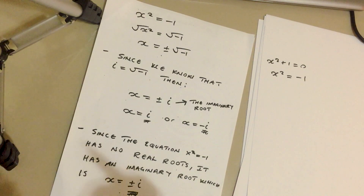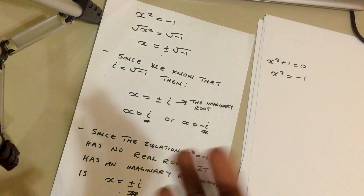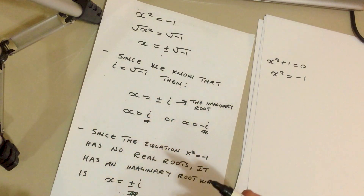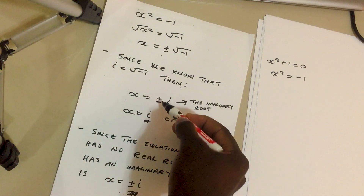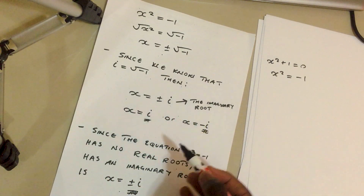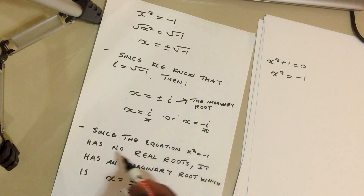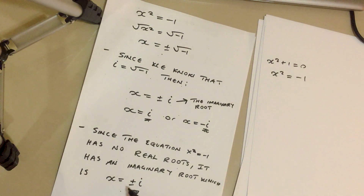For those wondering what real roots are, we're going to look at them later when we start examining quadratic functions and polynomials. For now, just know that plus or minus i is the imaginary root. Since x squared equals negative one has no real roots, it has an imaginary root, which is x equals plus or minus i.